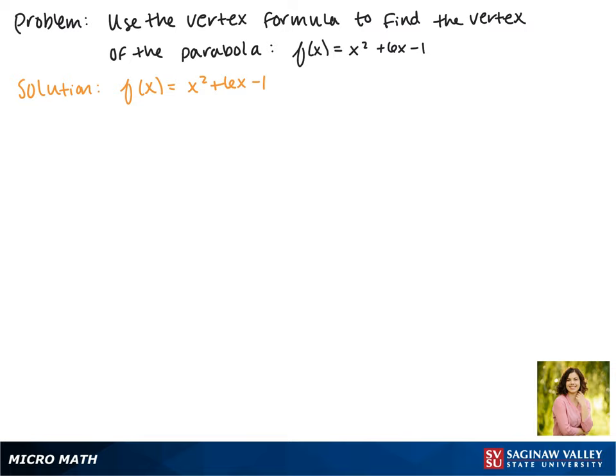Our first step is to find the x value of our vertex by using the vertex formula -b/2a. Here b is 6 and a is 1.